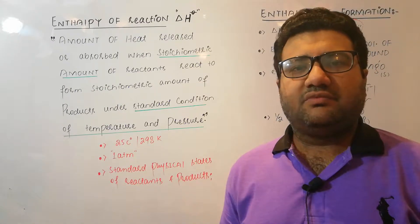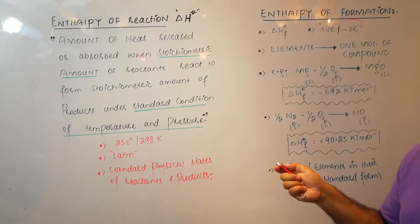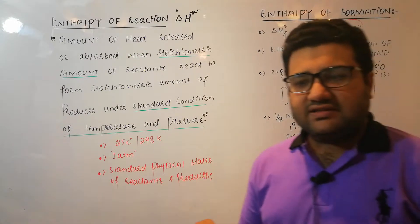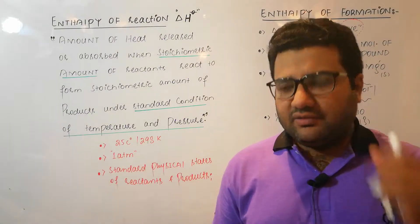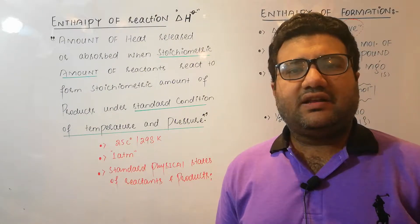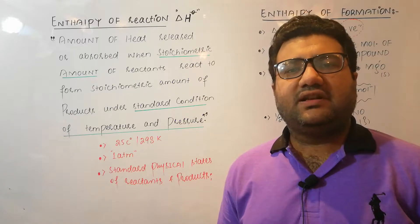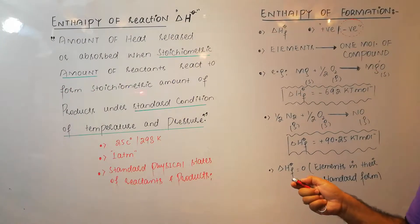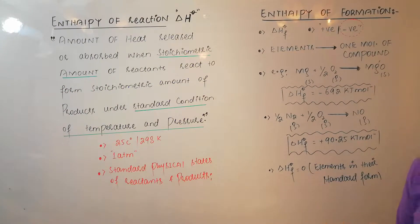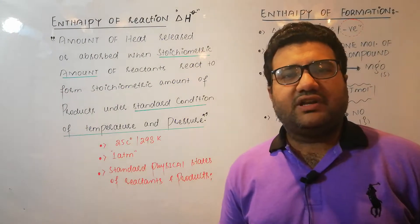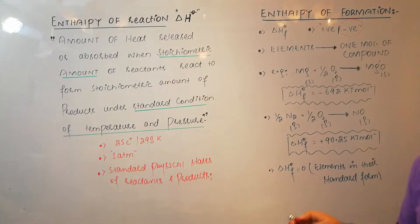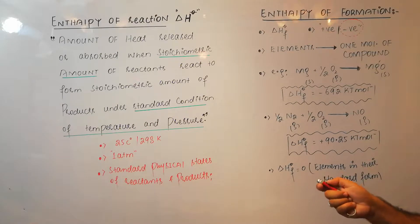This occurs when stoichiometric amounts of reactants react. Stoichiometric amounts are basically those amounts that are shown or present in the balanced chemical equation. Reactants react to form stoichiometric amounts of products, as must be mentioned by the thermochemical equation under standard conditions of temperature and pressure.